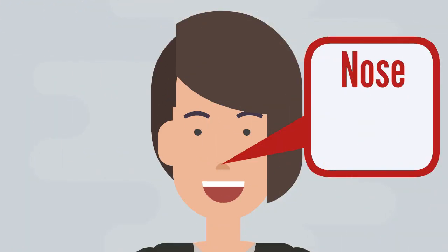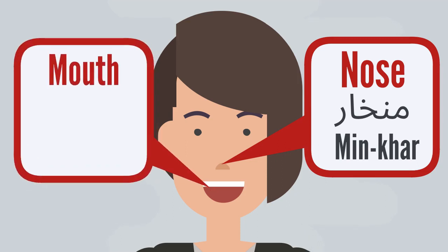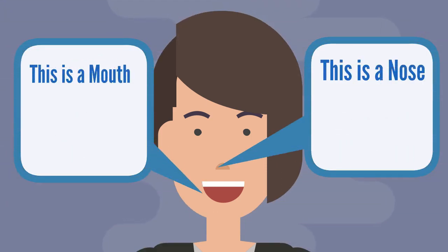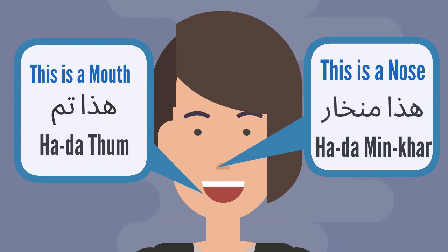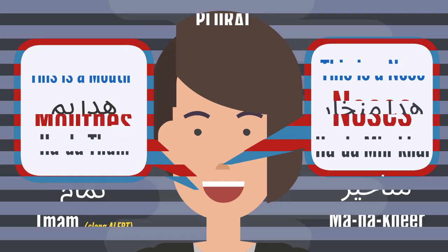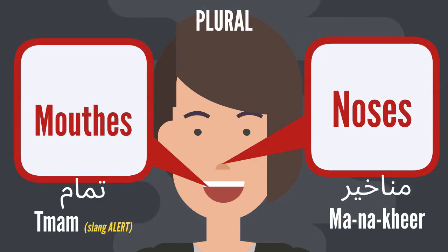Our next term is nose — minkhār. Mouth — tom. This is a nose — haada minkhār. This is a mouth — haada tom. The plural form for nose is manākhīr. And mouths — tmām.